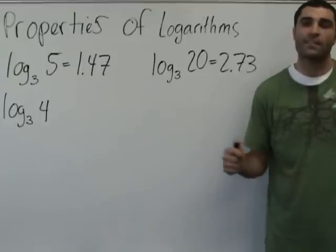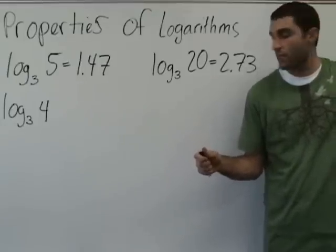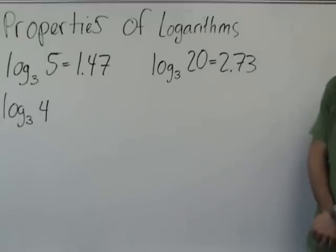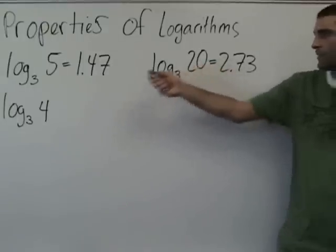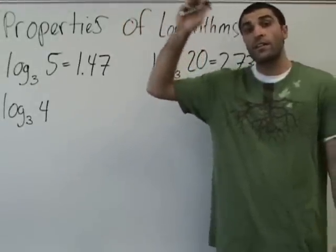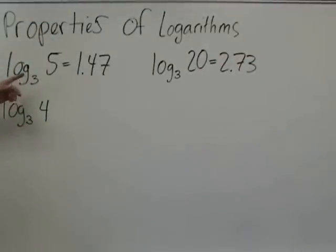So you basically have to search for how to recreate this 4 using 5 and or 20. Any guesses off the bat? Can't you just subtract 1.47 from 2.73? No, that wouldn't work. 20 divided by 5? Yeah, 20 divided by 5 is one way.